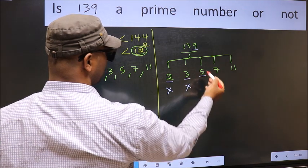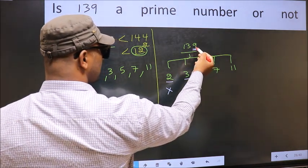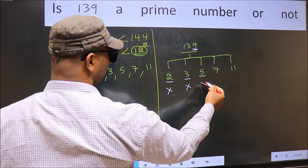Next number 5, last digit is neither 0 nor 5, so this is not divisible by 5.